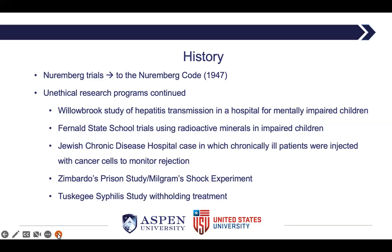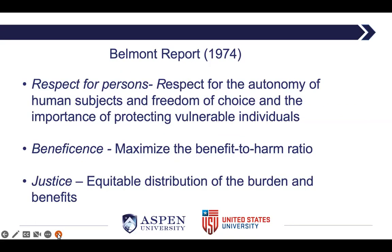It was the Tuskegee syphilis study that led to the Belmont Report and the Common Rule — a federal mandate for the existence of IRBs for regulated research. In the Tuskegee study, African Americans with syphilis were lied to and denied treatment for more than 40 years. Many people died as a result, they infected others, and they passed congenital syphilis onto their children. Following this study, the government created a commission, and the result was the Belmont Report.